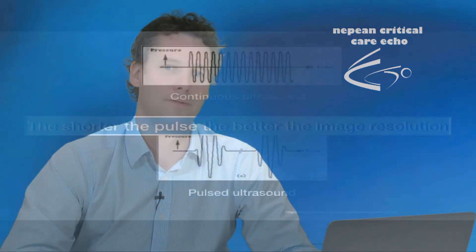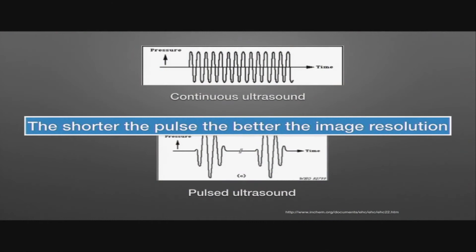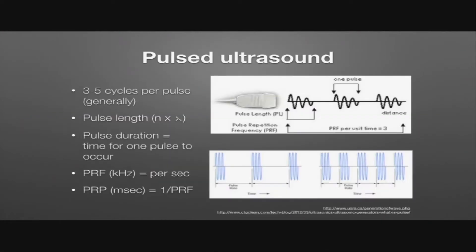So the shorter the pulse, the better the image resolution. The ultrasound pulses that are sent out are generally about three to five cycles per pulse.